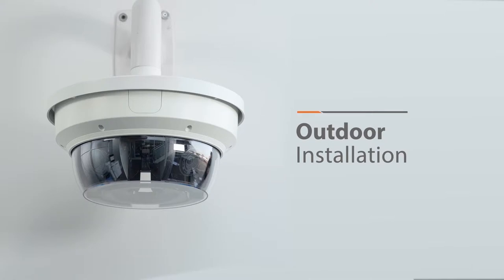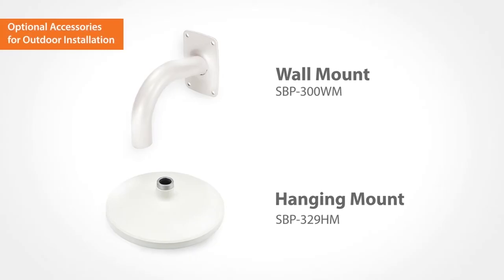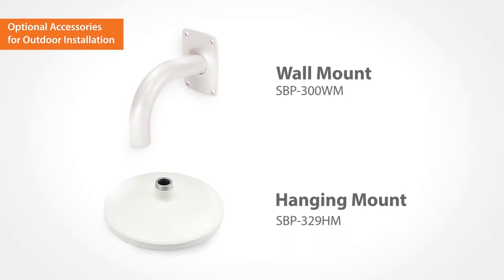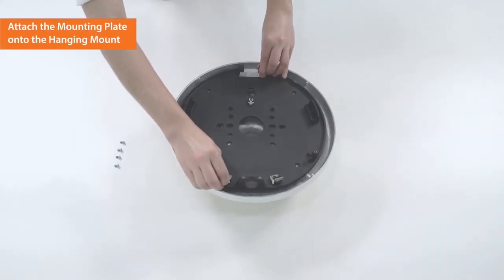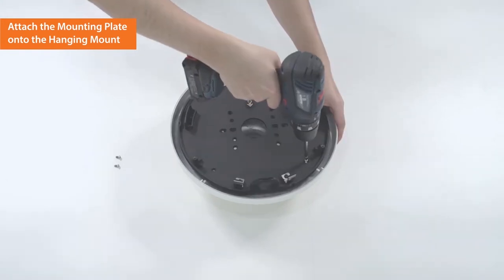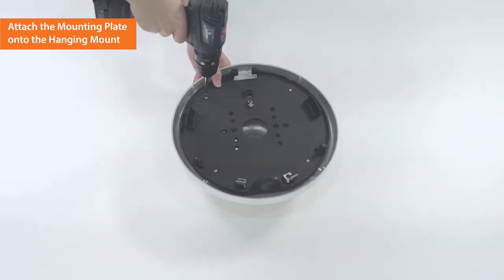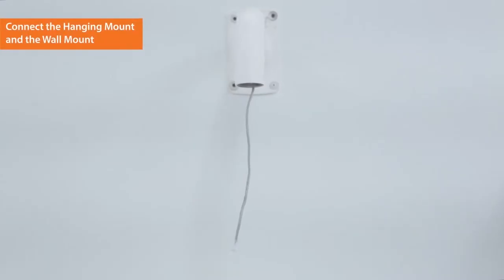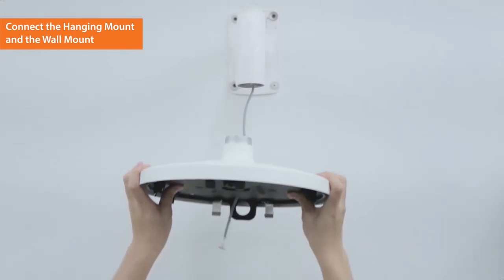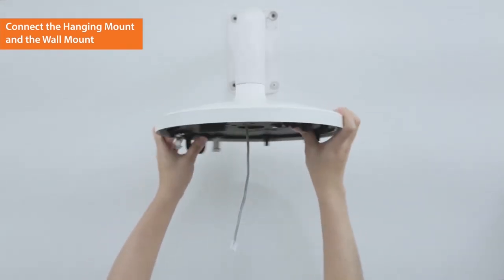To install the camera outdoors, optional accessories are required. To start, securely attach the mounting plate onto the hanging mount using the screws provided in the package. Insert the LAN cable into the mounting plate. Connect the hanging mount and the wall mount.